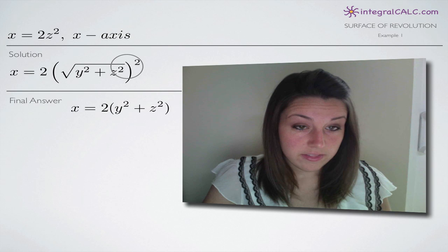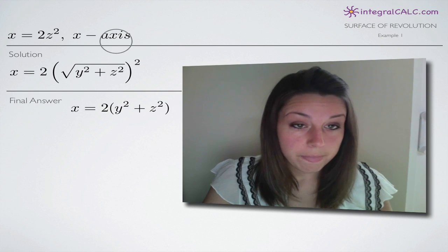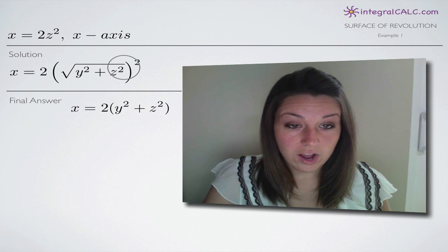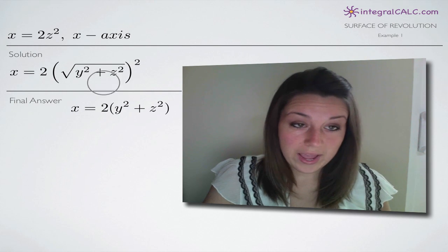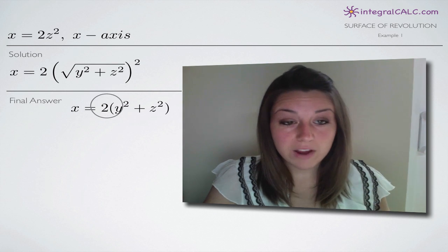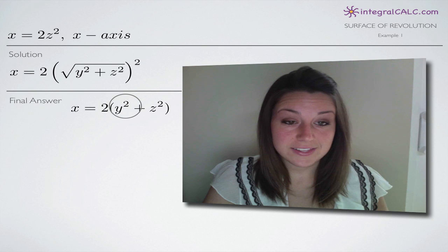And that will be the final answer because if we square the square root sign, obviously the square root sign is going to go away and we'll just be left with what's inside the square root sign. So our final answer is 2 times the quantity y squared plus z squared.